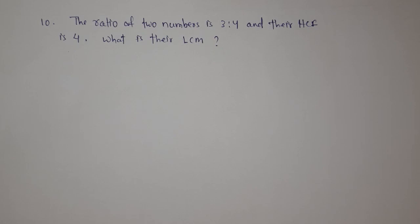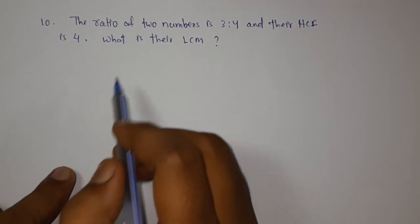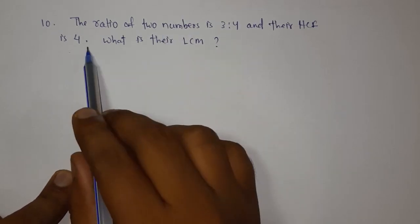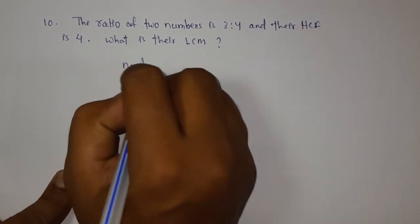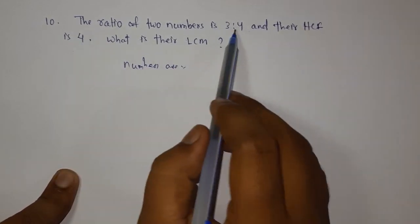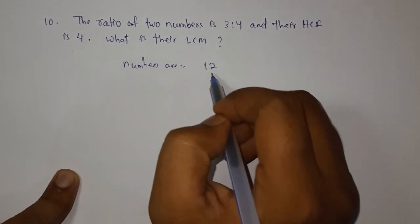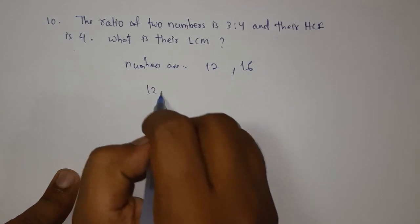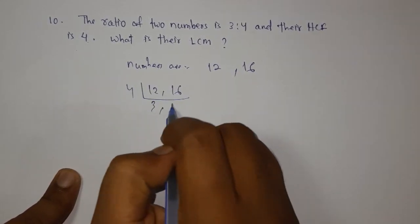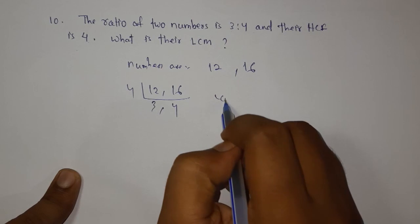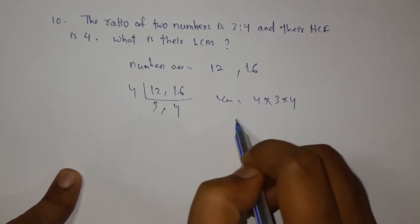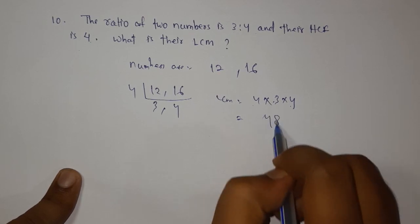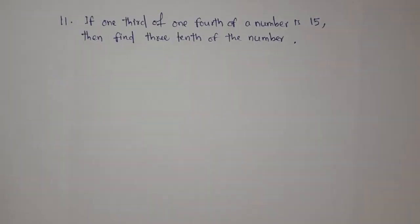Next question: the ratio of two numbers is 3 to 4 and their HCF is 4. What is their LCM? The numbers are 3 times 4 equals 12 and 4 times 4 equals 16. LCM of 12 and 16 equals 48. The answer is 48.